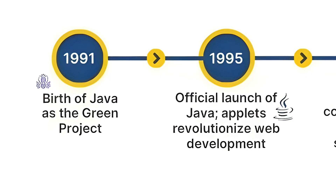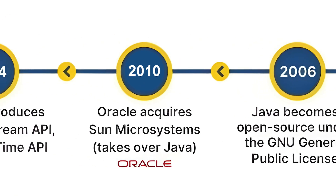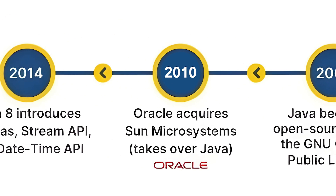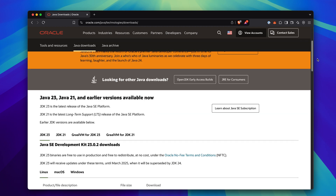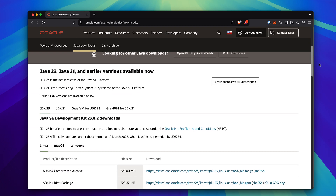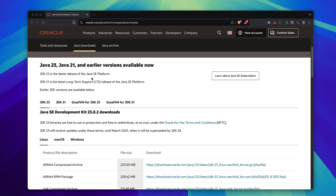Java was created in 1995 by James Gosling while working at Sun Microsystems. Fast forward to 2010, Oracle Corporation acquired Sun Microsystems, and with it, Java. That's why today, if you need to download Java, you can head over to Oracle's website. But instead of seeing the option to download Java, you'll see something called the JDK. Let's break this down.